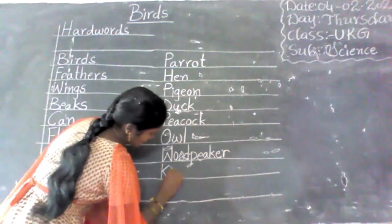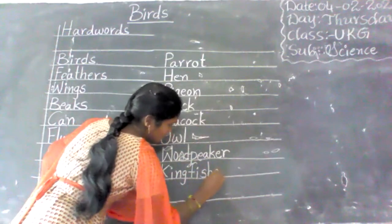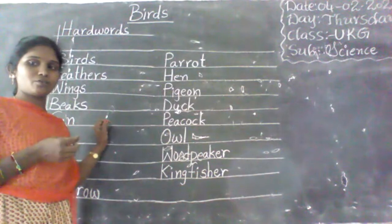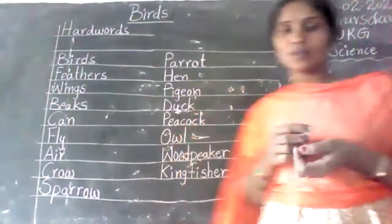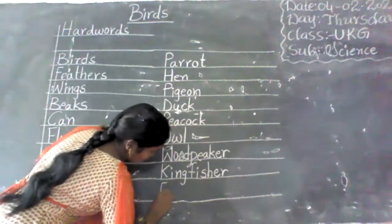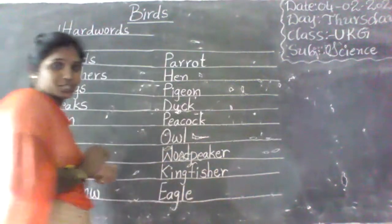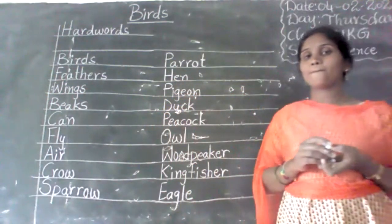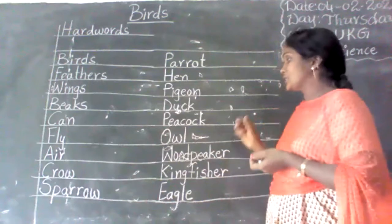Kingfisher — K-I-N-G-F-I-S-H-E-R. Eagle — E-A-G-L-E. Vulture. These are the hard words from the birds lesson.